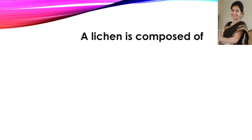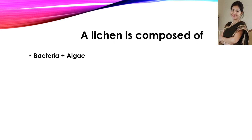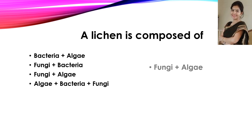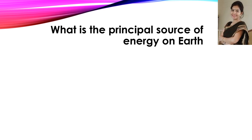Now the next question: a lichen is composed of — these are your options. The correct answer is fungi and algae.